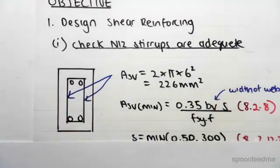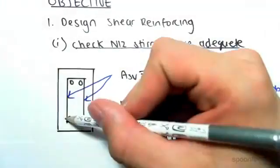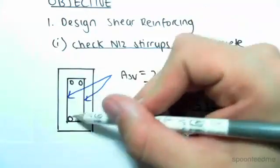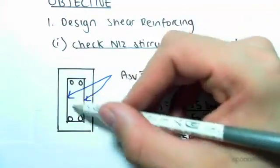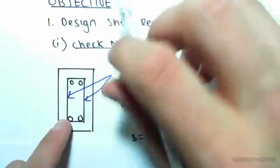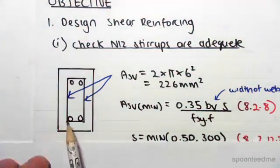So those two vertical stirrups we call them the legs - they resist shear. So we need to check that these legs have some type of minimum area which the code tells us.